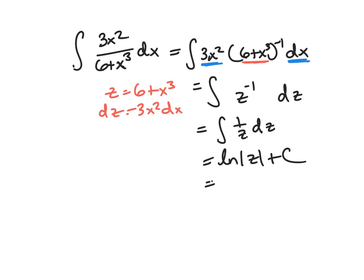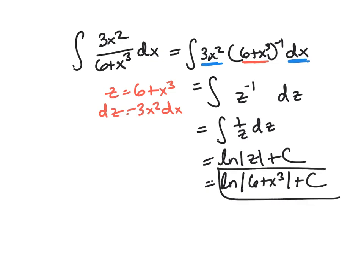Then we want to go back to our original variable. Since z is 6 plus x cubed, we toss that in: the natural log of the absolute value of (6 plus x cubed) plus c.